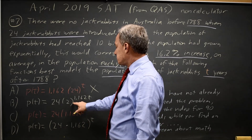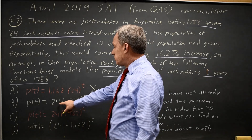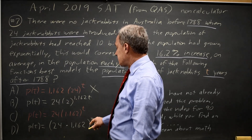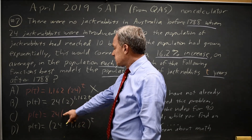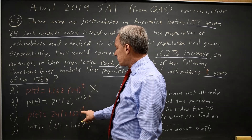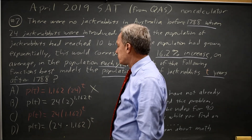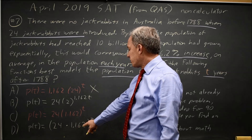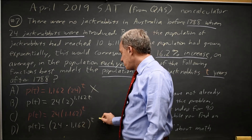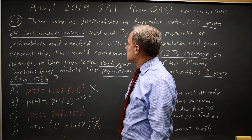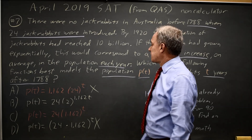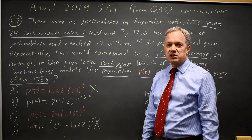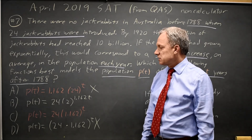For choice B, T equals 0 gives you 24 times 2 to the 0, which is 24 times 1, which is 24 — so that could be right. Choice C gives 24 times 1.162 to the 0, which is also 24 times 1 — could be right. Choice D gives some weird number to the 0, which would be 1 jackrabbit in 1788. So choices A and D are wrong; we now have to decide between choices B and C.